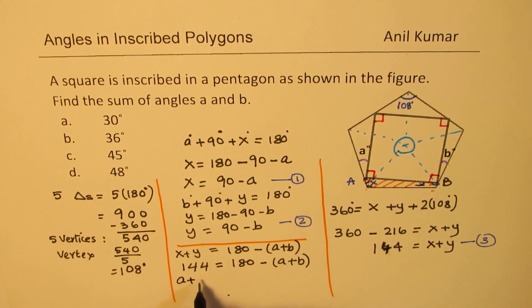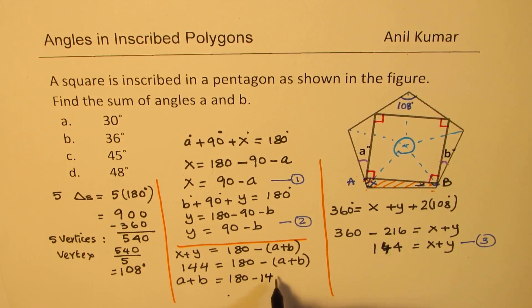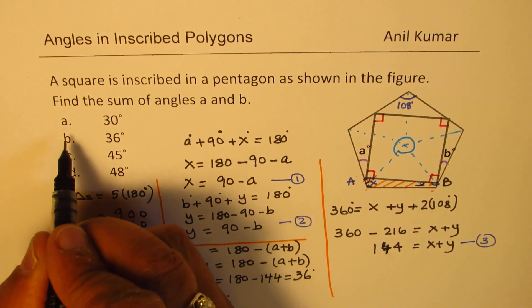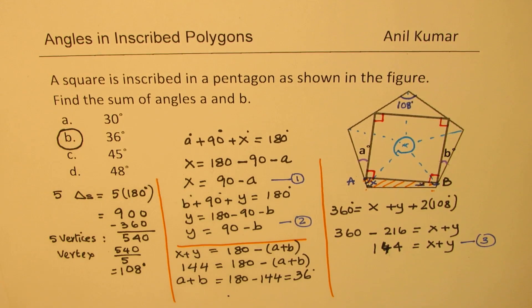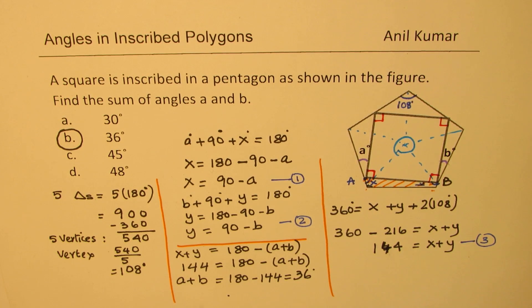So from here, taking A plus B to the left side, we get 180 minus 144, and that equals 36 degrees. So option B is the right option. Is that clear? So that is how we can actually solve such questions.